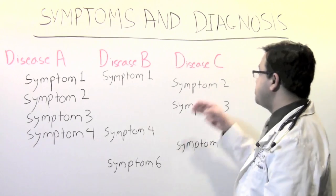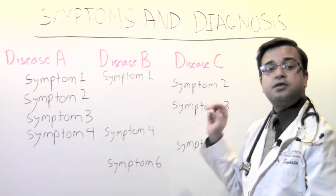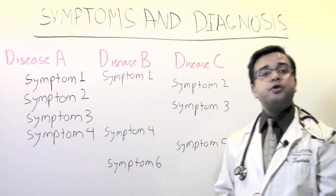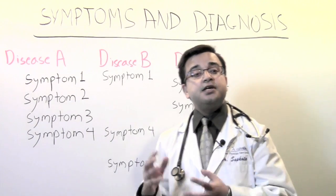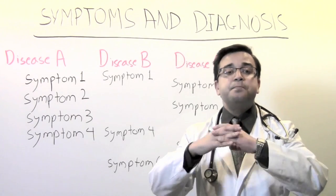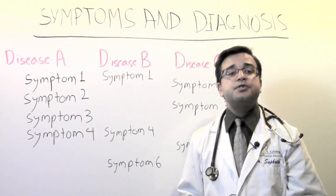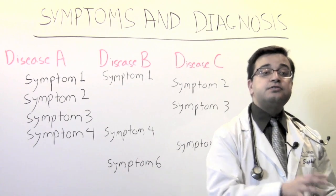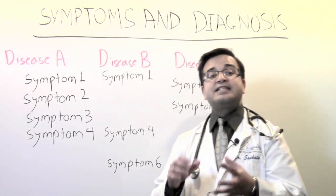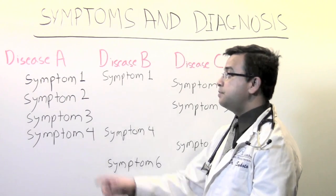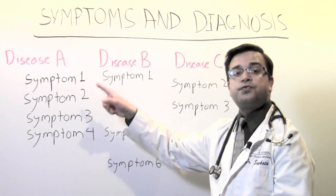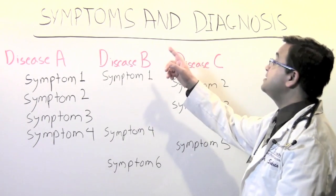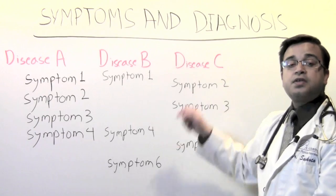If someone has symptom 2 and symptom 3, does that person have disease A or disease C? The more important question is: if someone has an exact match, is that person more likely to have that disease than another disease with an incomplete match? For example, if someone has the combination of symptoms 1, 2, 3, and 4, can that person still have disease B or disease C?